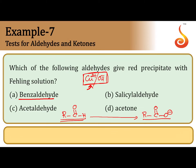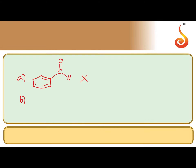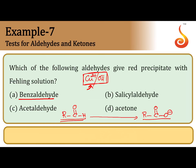Next, option B: salicylaldehyde — CHO, OH — ortho-hydroxy benzaldehyde. Here also, this is an aromatic aldehyde, so it would not give Fehling's test.